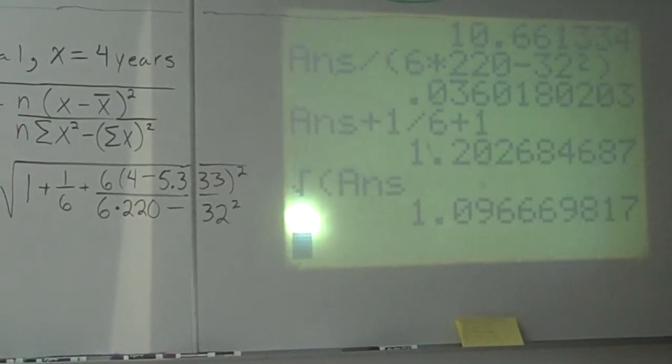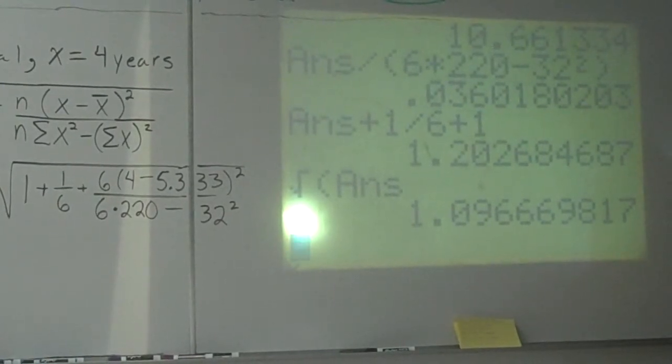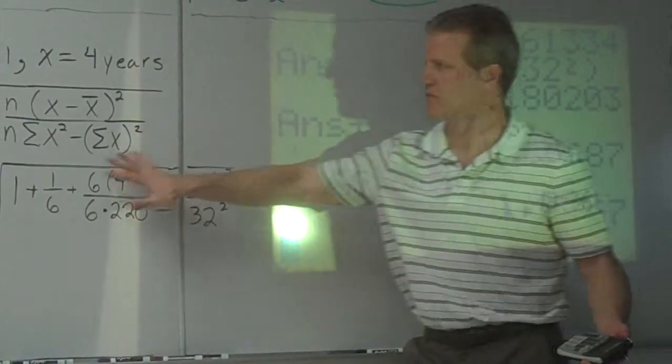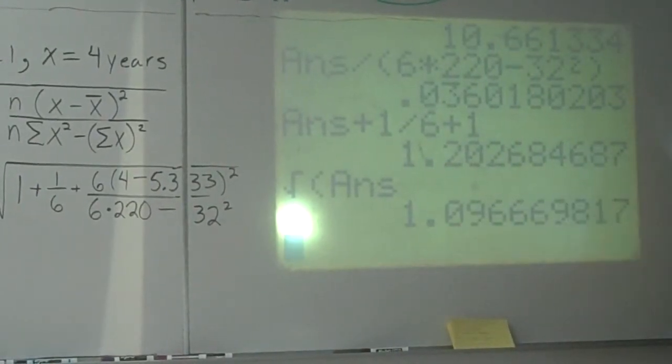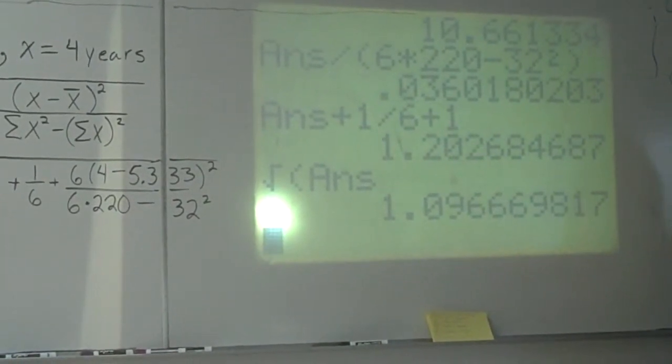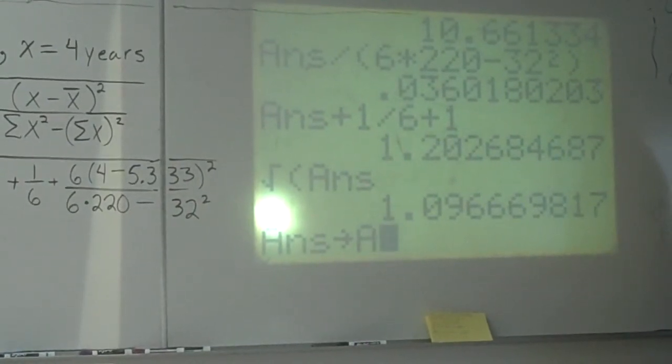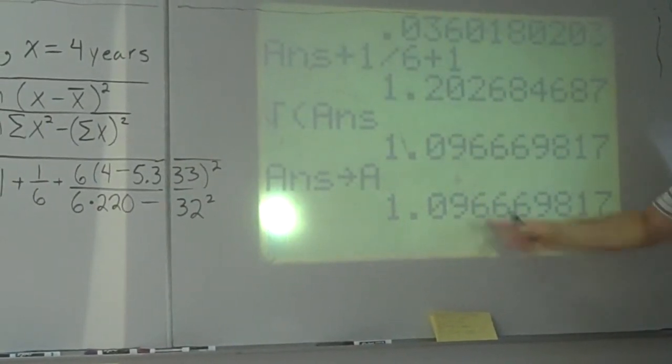Parenthesis, 6 times 220 minus 32 squared. Then I'm going to add the 1/6 and the 1. So plus 1 divided by 6 plus 1. I'm going to take the square root. And so that black, this black piece right here comes out to 1.0966. Okay. What is that? I don't really have a meaning for you, but that's just this quantity here. Okay. So I'm going to store it. Instead of trying to write it all down, I'm going to store it. I'm going to say store. Store is right above your ON button. Alpha A. So that's stored in A.